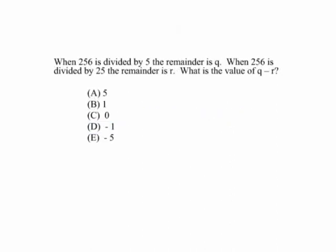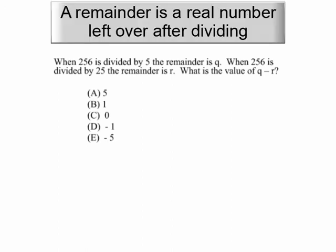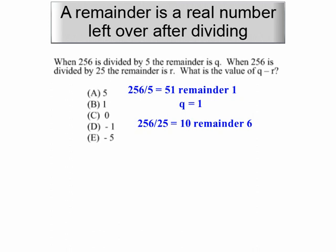When 256 is divided by 5, the remainder is q. When 256 is divided by 25, the remainder is r. What's the value of q minus r? It looks hard until you remember a remainder is a real number left over after you divide one number by another — it's not just a decimal. If I divide 256 by 5, 5 goes 51 times and leaves a remainder of 1, so q equals 1. If I divide 256 by 25, it goes 10 times and leaves a remainder of 6, so r equals 6.